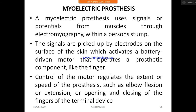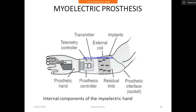This is a myoelectric prosthesis. Looking at the image of this myoelectric prosthesis and its internal components, we can identify: telemetric controls, the prosthetic hand, transmitter, external coil implants, prosthesis controller, posterior link, and the prosthetic interface.